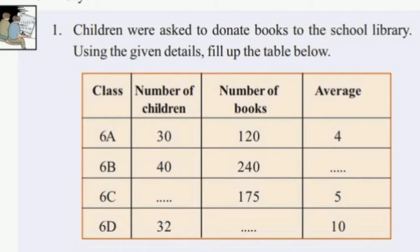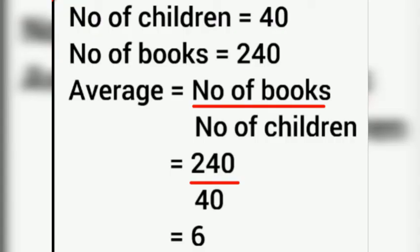Now for 6B, the number of children is 40, and the number of books is 240. Average is equal to number of books divided by number of children: 240 divided by 40, and we get 6.